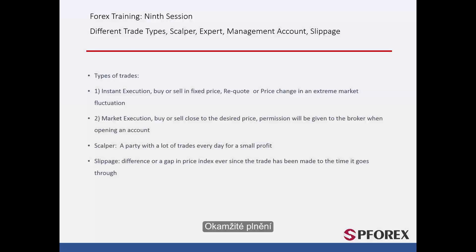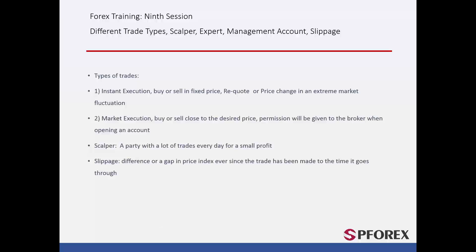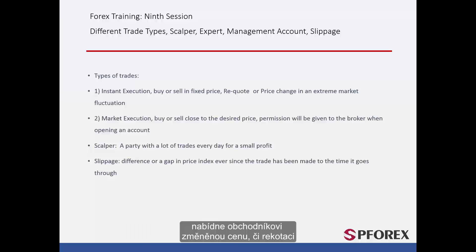First we will look at instant execution. Here the broker will process buy or sell requests from an investor at the exact price they made. Requests from the investor to sell and close orders are handled the same way. If a broker is not able to execute the investor's request immediately due to market fluctuations, then the broker will provide the investor with the price change or a requote.